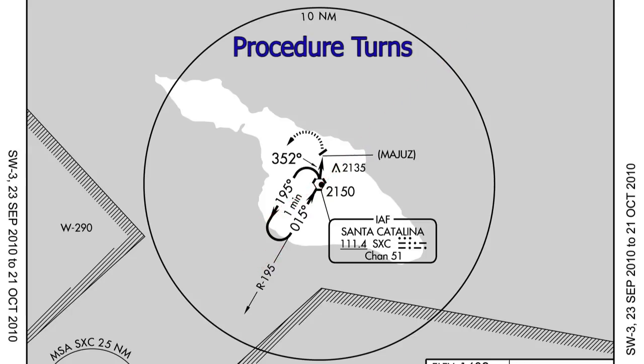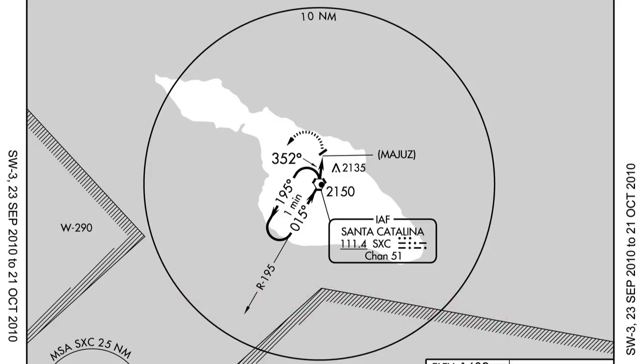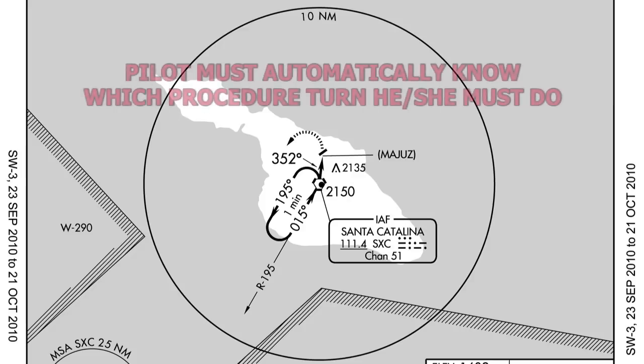There are three types of different procedure turns: a direct procedure turn, a parallel procedure turn, and a teardrop procedure turn. Which one we do depends on the direction that we're coming from. When we are looking at an approach plate, it will only tell us that we need to do the procedure turn — it will not show us how or which one. A pilot must know how to do a procedure turn automatically.